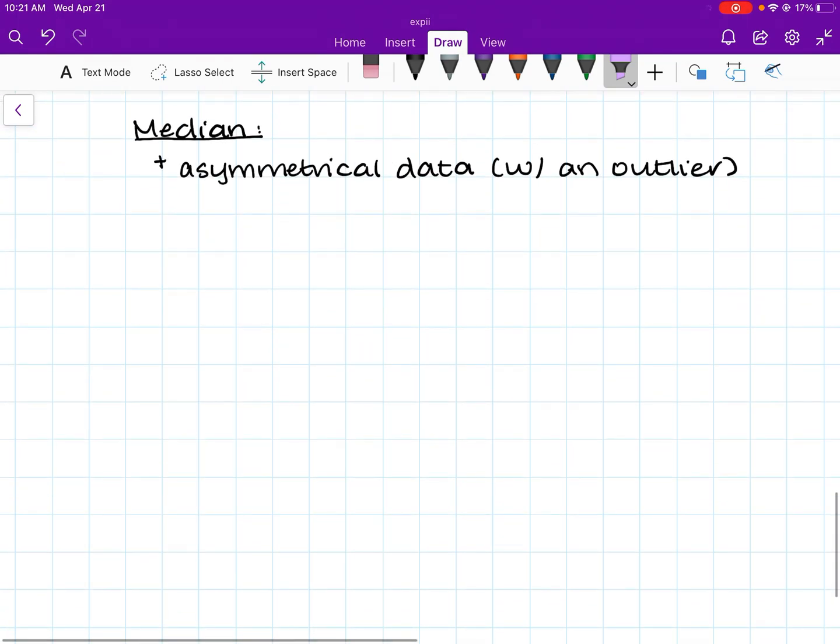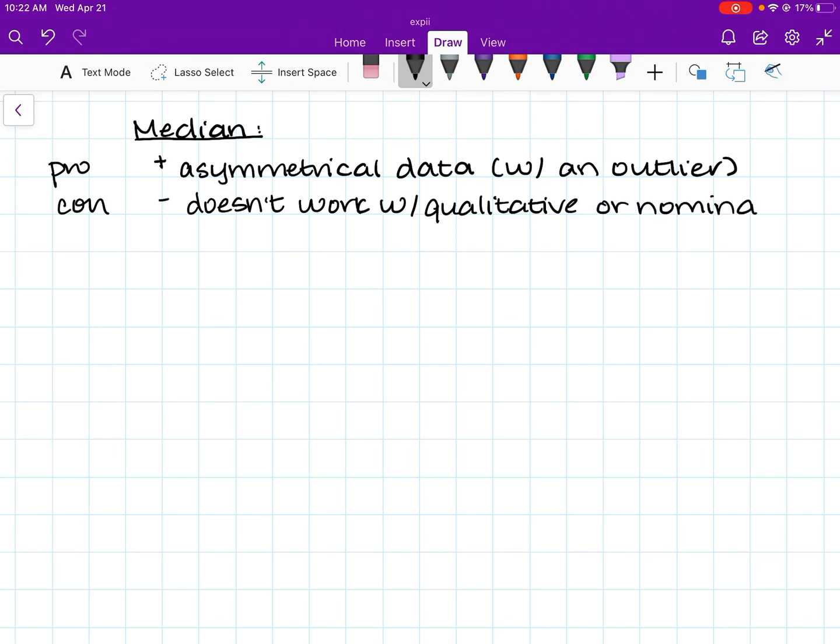So as we saw with this previous example, problem number two here, our outlier is 55,000. And so median is really good for that kind of data. However, median is not good for qualitative data. So a negative, a con is it doesn't work with qualitative or nominal data.